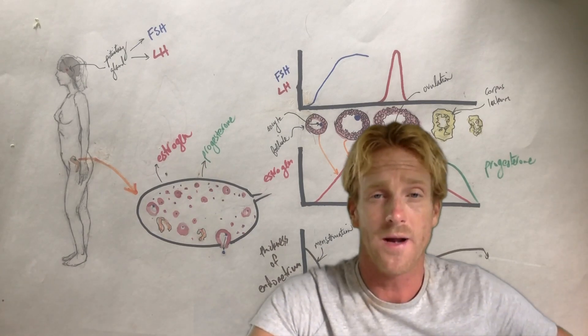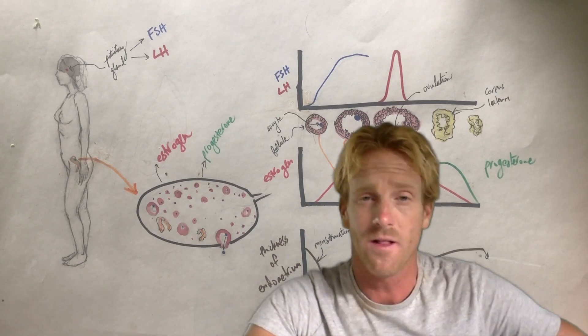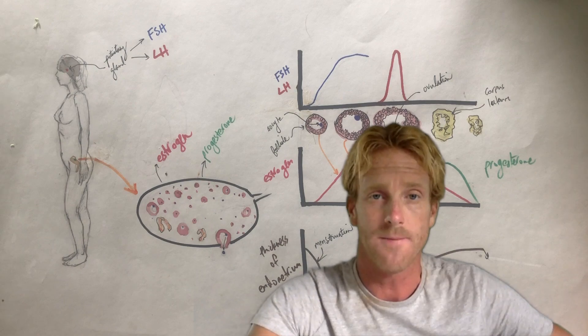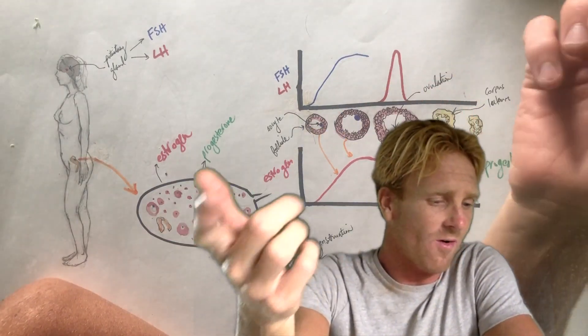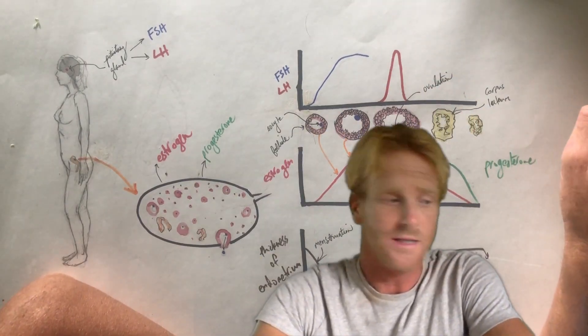So the menstrual cycle is a process in which the female body releases an egg that can be potentially fertilized by a sperm to make a baby. The menstrual cycle is controlled by a series of hormones. There's two major organs that are going to release these hormones.